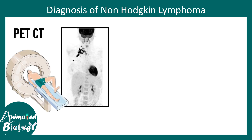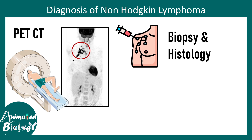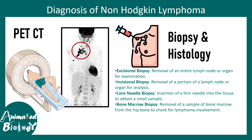Diagnosis of non-Hodgkin's lymphoma can be done with imaging studies like PET scan or PET CT scan. Cancer cells are highly dividing so they uptake a lot of glucose for energy metabolism — the CT image shows which tissues are uptaking very high glucose, and you can see the lymph nodes are highly highlighted. Other diagnostic approaches include biopsy — excisional biopsy, incisional biopsy, core needle biopsy, and bone marrow biopsy — depending on where the spread has occurred.